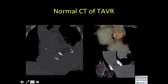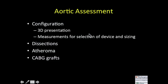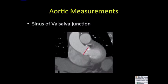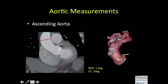What we're trying to achieve with all the measurements of the annulus is a well-fitting prosthetic valvular device with no gaps between the device and the annulus, and no covering of the origin of the coronary arteries. For the aorta, we want to provide a 3D presentation and measurements that allow selection of approach and device sizing, noting any dissections, atheromas, or bypass grafts that might impact approach. We provide measurements of the annulus medial to lateral, above the valve plane, the sinotubular junction, the ascending aorta, and three-dimensional representations.